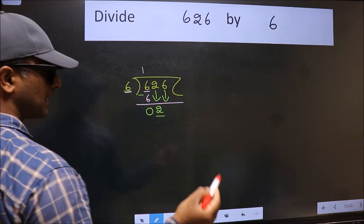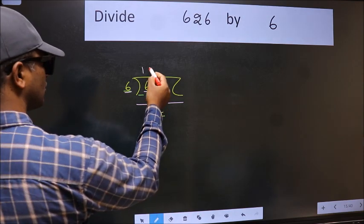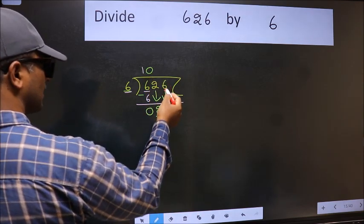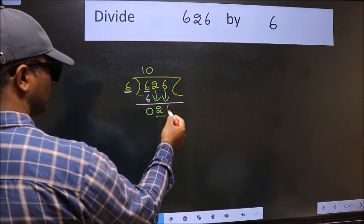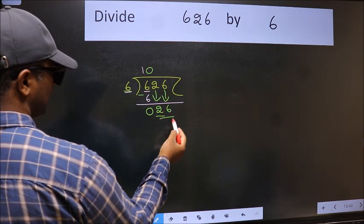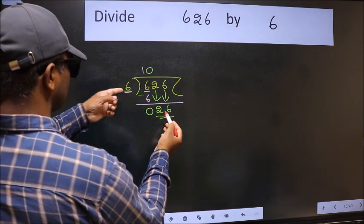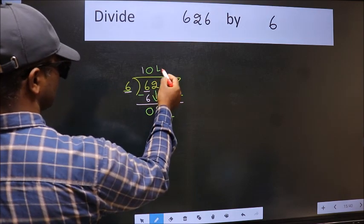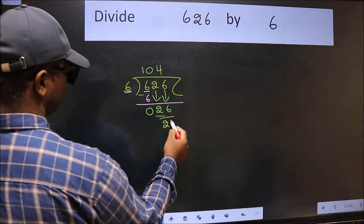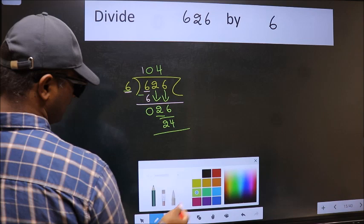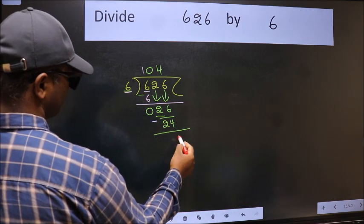And the rule to bring down the second number is we should put 0 here. Then only we can bring this number down. Now 26. A number close to 26 in the 6 table is 6 fours, 24. Now we should subtract. We get 2.